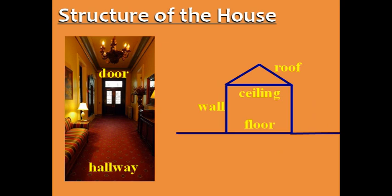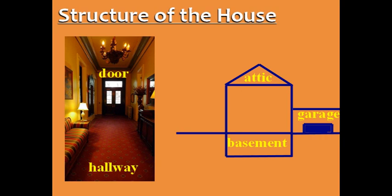Structure of the house. Finally, let's go through the hallway and out the door so we can see the outside of the house. The vertical part is called a wall. The bottom is the floor, and the top is the ceiling. The word ceiling refers to the interior part, and the word roof refers to the exterior part. Some houses have a basement that is underground and an attic to store things, and you can park your car in the garage.